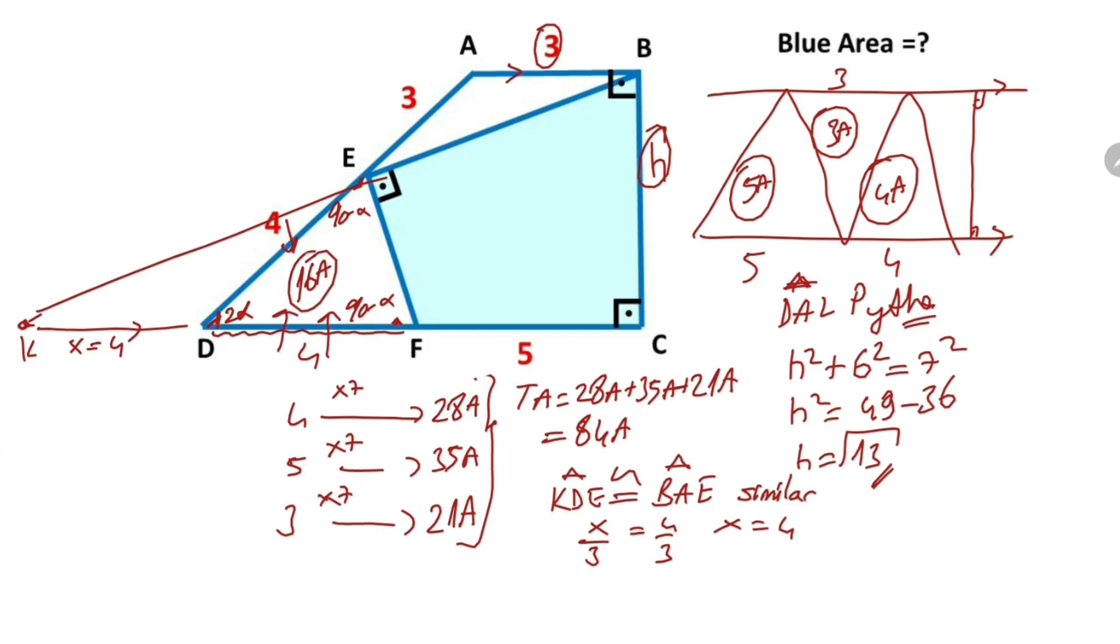If the area of triangle DEF equals 16a, this area must also be 16a because they have the same base. We know that if two triangles are similar, the ratio of their areas must equal the square of the similarity ratio. Therefore, the area of triangle KDE over the area of triangle BAE equals 4 over 3 whole squared.